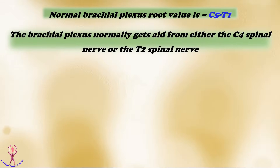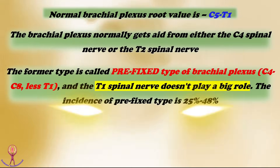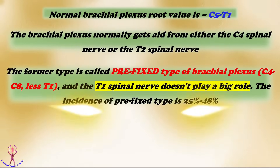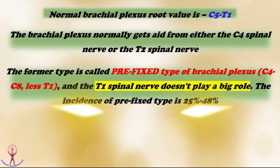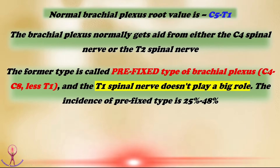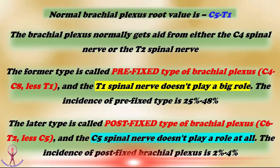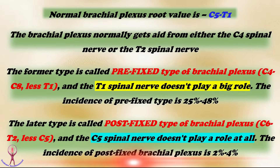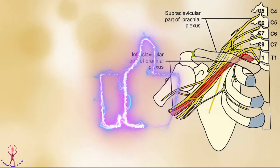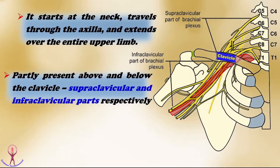Occasionally, the brachial plexus gets aid from either the C4 or T2 spinal nerve. The former type is called the prefixed type of brachial plexus, with a root value of C4 to C8 with less contribution from T1. Its incidence is 25% to 48%. The latter type is called the postfixed type, with root value C6 to T2 with less C5. Its incidence is just 2% to 4%. The brachial plexus begins at the neck, goes through the axilla, and extends down the upper arm, partially present above and below the clavicle, called the supraclavicular and infraclavicular parts.